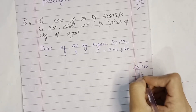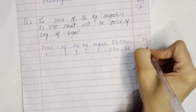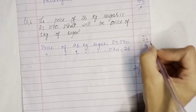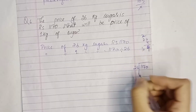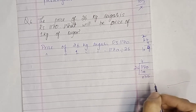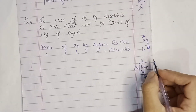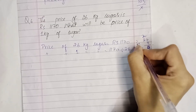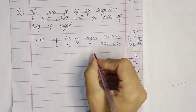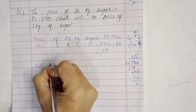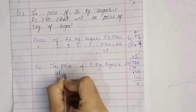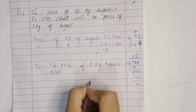1170 divided by 26: 26 × 4 = 104; 117 minus 104 = 13; bring down 0 to get 130; 26 × 5 = 130. So the answer is 45. The price of 1 kg sugar is rupees 45. Question number 6 is also solved.